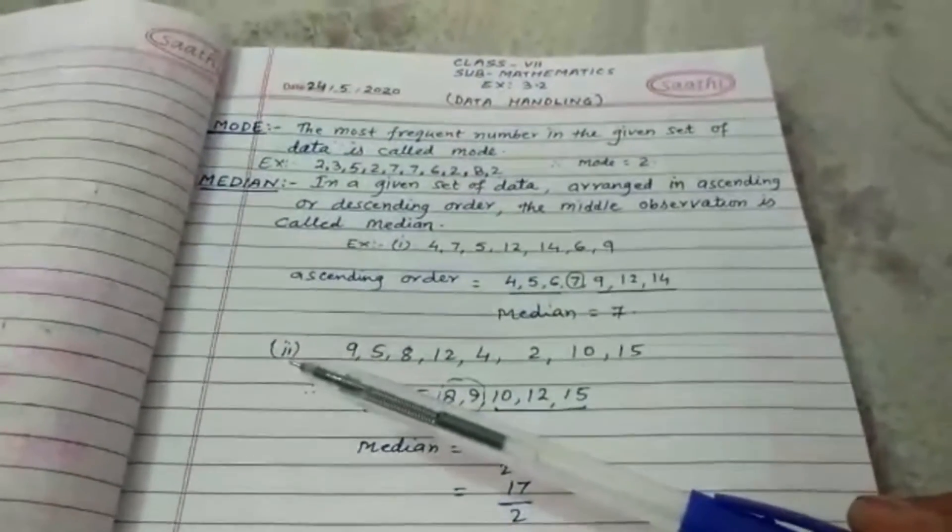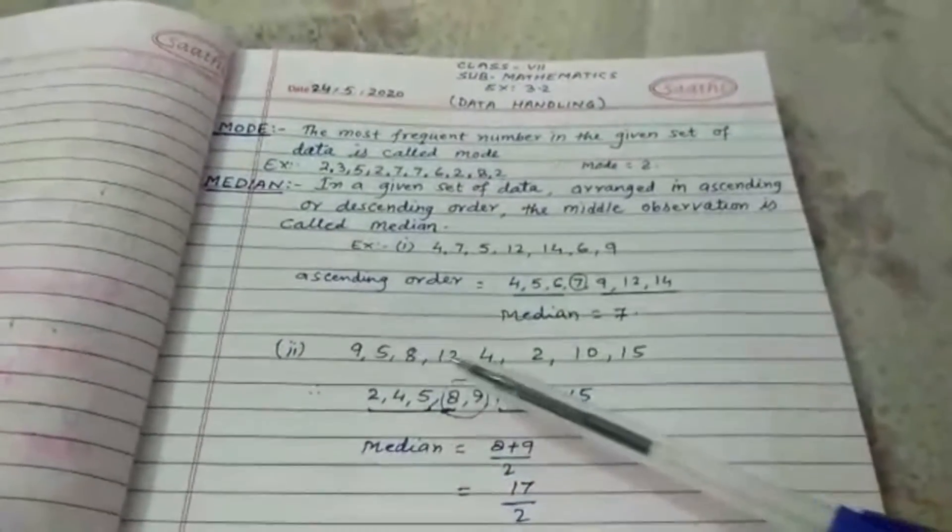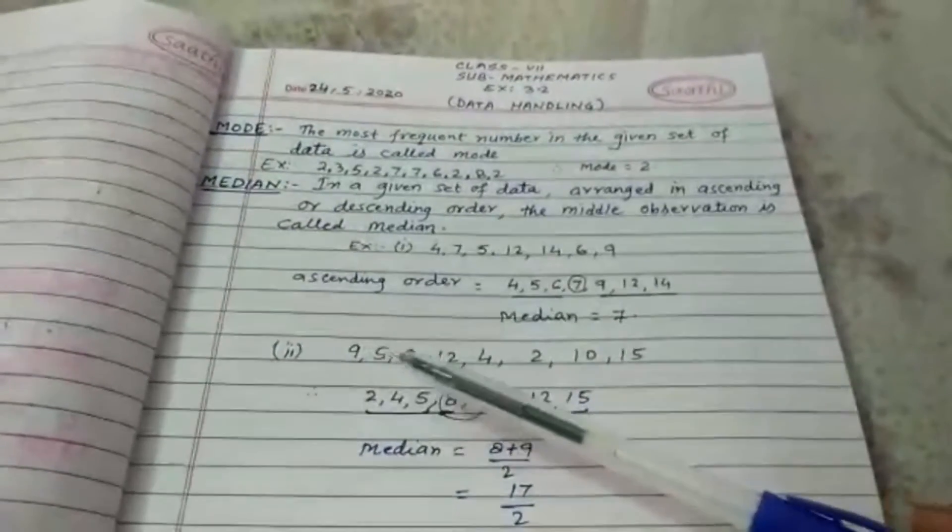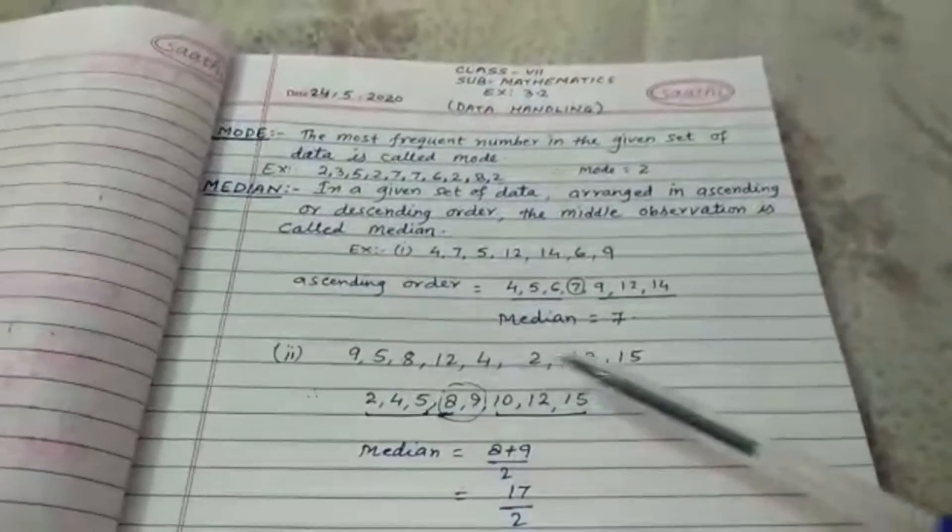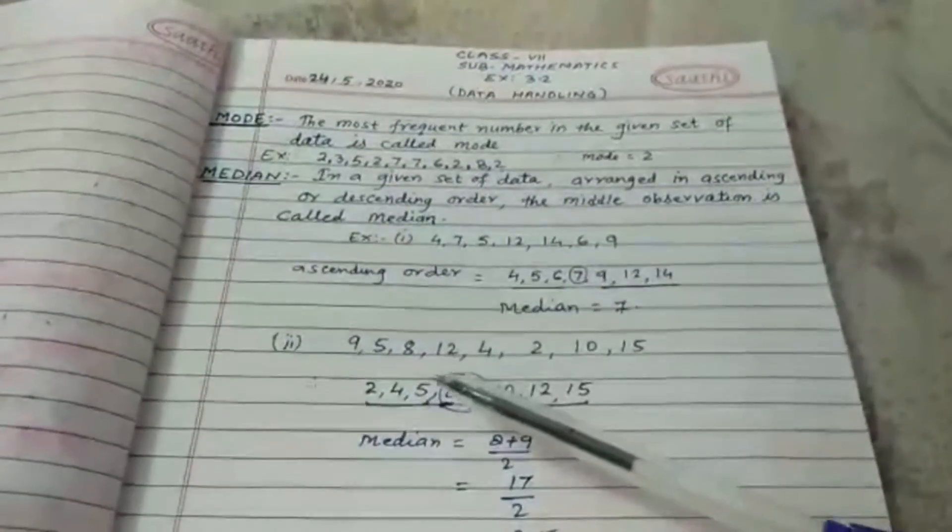Now in the second case, if the number of terms are even: 1, 2, 3, 4, 5, 6, 7, 8. When the number of terms are even, then what is median?